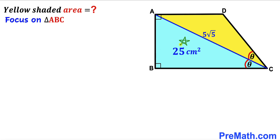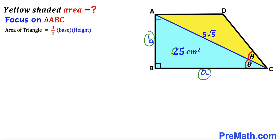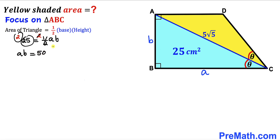Focusing on the blue triangle ABC, let's label one side as lowercase a and the other as lowercase b. Using the triangle area formula — Area = ½ × base × height — with base a, height b, and area 25, we get: 25 = ½ × a × b. Multiplying both sides by 2 gives us a × b = 50. Call this Equation 1.